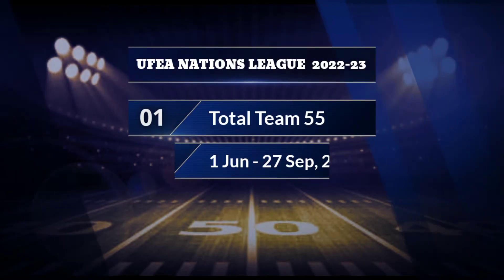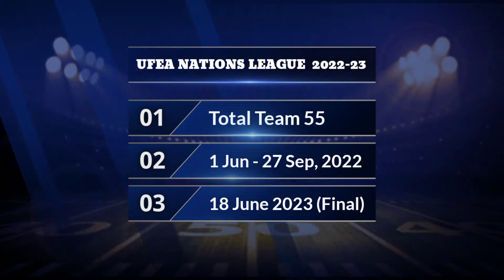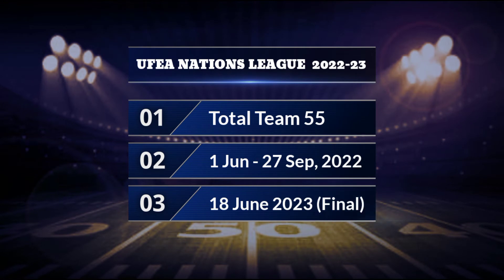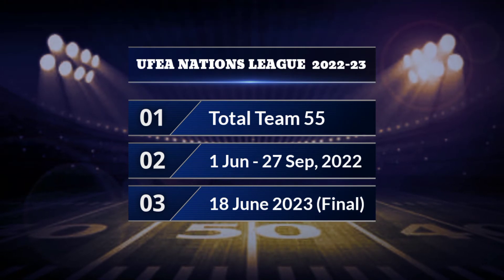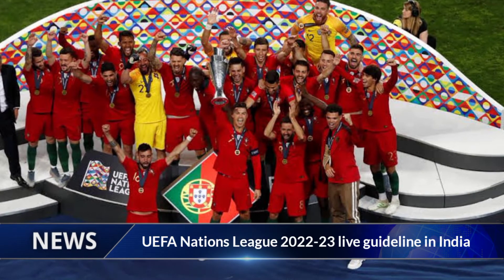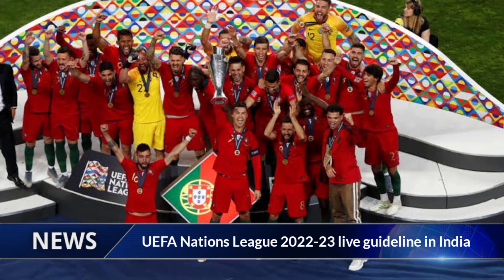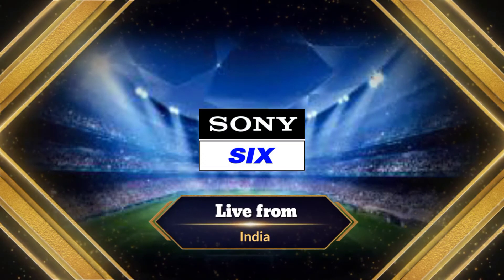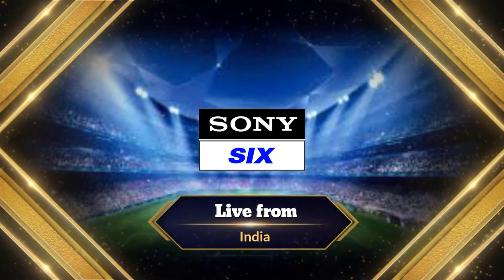UEFA Nations League 2022 to 2023: total teams 55, schedule Zone 1 and Zone 2, starting 27 September 2022, final match June 2023. Now enjoy the UEFA Nations League 2022 to 2023 live broadcasting guideline in India.